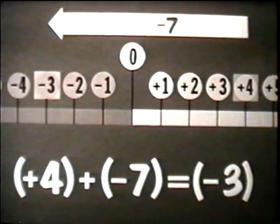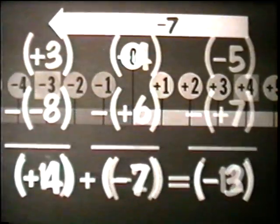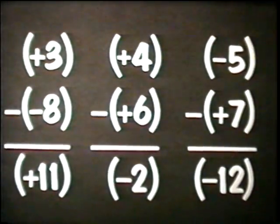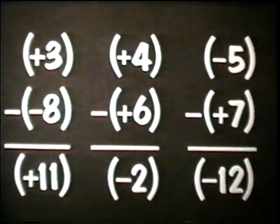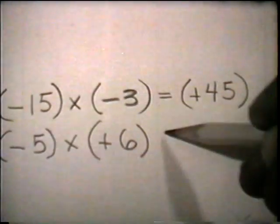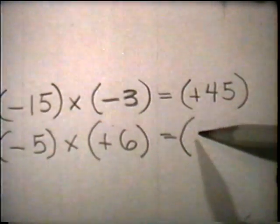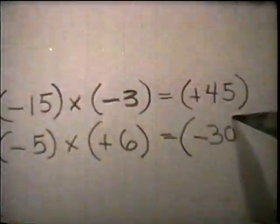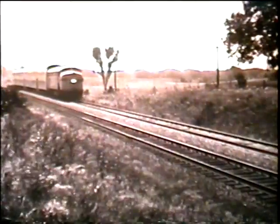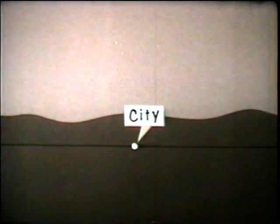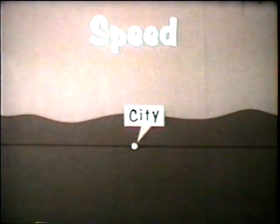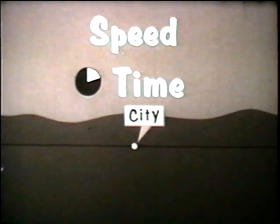So we've seen the number line used to demonstrate the rules for adding and subtracting signed numbers. Now let's see what the rules are for multiplying signed numbers. We'll let a railroad represent a number line, with the zero point represented by a city. We'll think about three elements in solving the problems: speed, time, and distance.